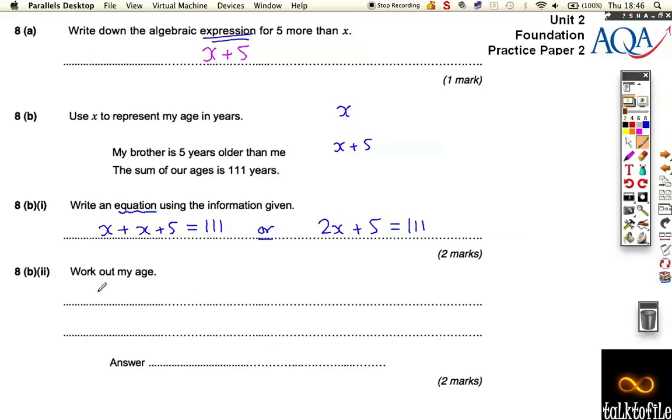Last one, let's just work out my age. We've got 2x plus 5 is 111. So we need to solve this, this is a little equation now. So if we take away 5 from both sides of our equation, we get 2x is equal to 106. Then we need to divide both sides of our equation by 2. And that gives us, x must be 54. And then we've solved it.